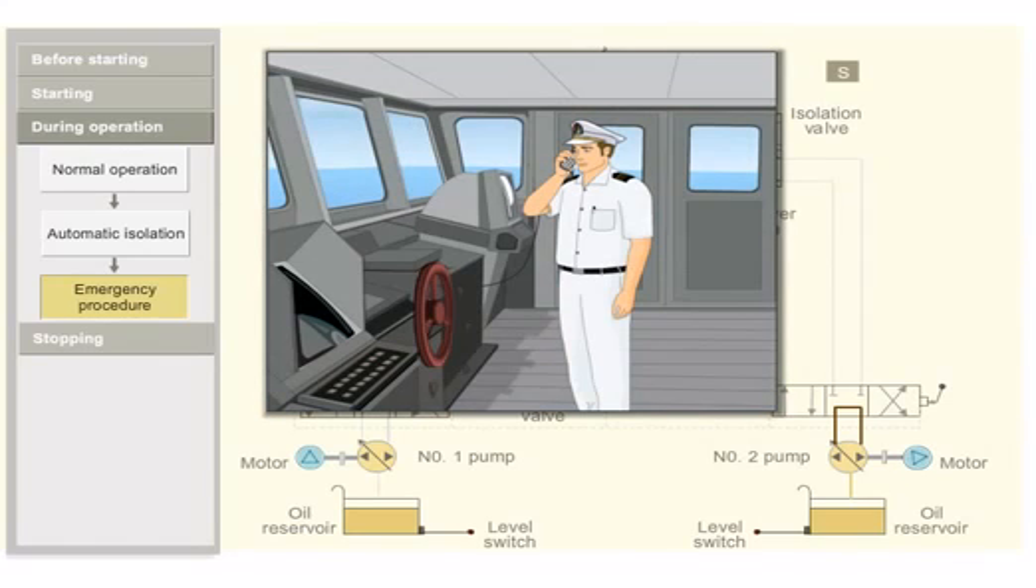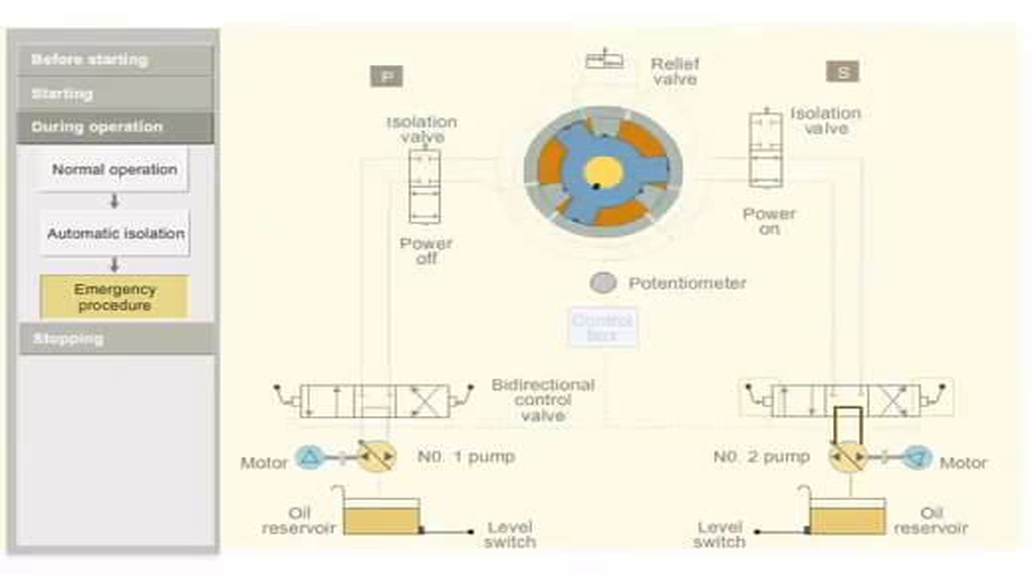Consider a port order is given from the bridge and suddenly the power supply fails in the control unit. In such an emergency, an alternative communication system is used to give the helm order to the steering compartment. The bi-directional control valve is manually actuated by using the levers.